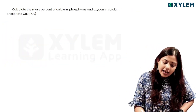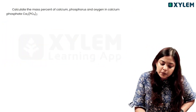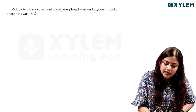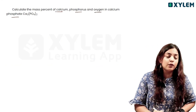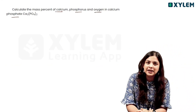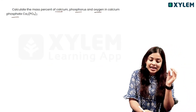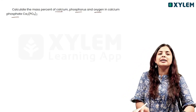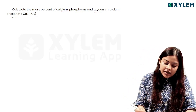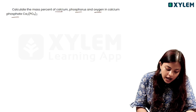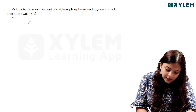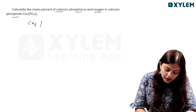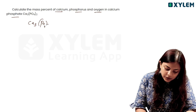Next question: calculate the mass percentage of calcium, phosphorus, and oxygen in calcium phosphate. Calcium phosphate is the compound. We need to first find the molecular mass of calcium phosphate.